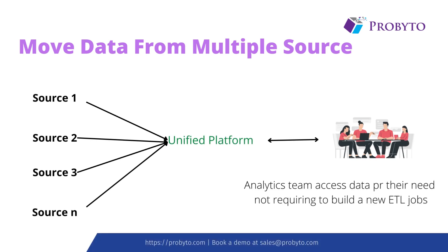So how exactly does this look? From all source systems — source 1, source 2, source 3 — you bring all the data together into a unified platform. Your analytics team can then access data as needed from that unified platform, creating aggregates by month, by year, by customer, as use cases evolve. This ensures you are not repeatedly calling the source system and also stores a copy of your transactional data, making it available to users.